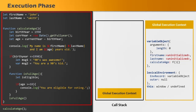The lexical environment will also get created. It will have an environment record which points to the variable object, and another property called outer which will be set to null, because since this is the global execution context, all the code is in global scope and there is no outer scope. The this variable points to the window object when running in non-strict mode, but if the code is running in strict mode, this variable will be set to undefined.